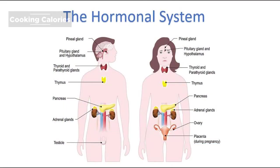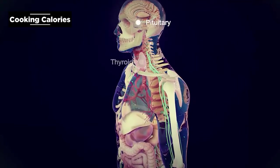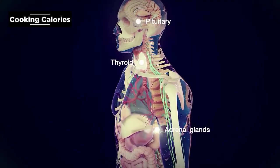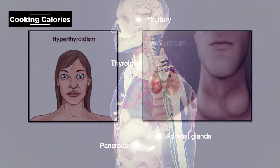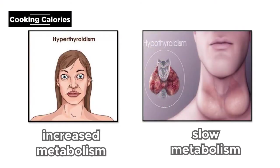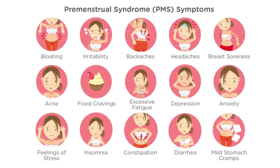Hormones: The BMR is controlled by the nervous and hormonal systems. Hormonal imbalances can influence how quickly or slowly the body burns kilocalories. For example, imbalances such as hypo- and hyperthyroidism caused by the thyroid hormone thyroxine can speed up or slow down the BMR. Premenstrual hormones also slightly raise the BMR.